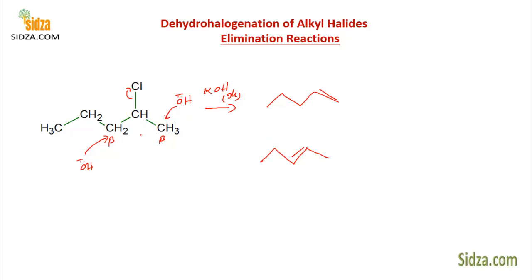You expect two products, but we must remember that the major product is formed as per Zaitsev's rule. Zaitsev's rule states that the higher the substitution around the alkene, the more stable it is — so the more substituted alkene is the major product. The hydroxide removes hydrogen from the beta carbon with fewer hydrogen atoms; CH2 has fewer hydrogens than CH3, so the more substituted 2-pentene is the major product and 1-pentene is the minor product.